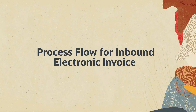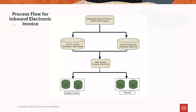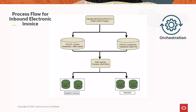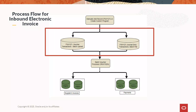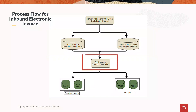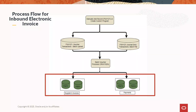Now let's look at the process flow for the inbound electronic invoice. You can upload e-invoices for the payments received from suppliers. You can enter supplier invoice details into your system using the batch voucher revision program or a custom program. Alternatively, you can use pre-built orchestration to automate the process of entering supplier invoice information into the system. After converting the external vouchers and transferring them to the batch processing tables, run the batch voucher processor for creating supplier invoice details and payment details.